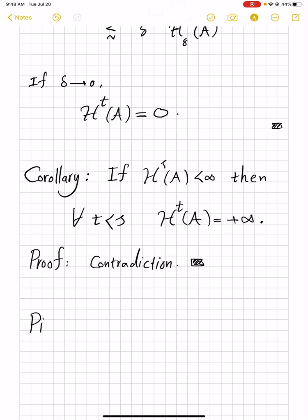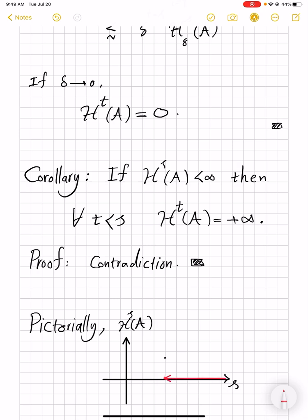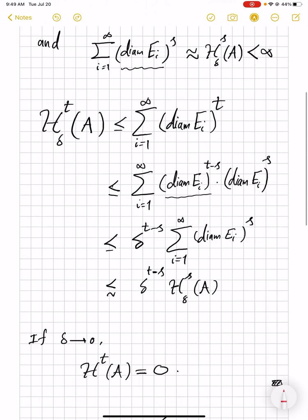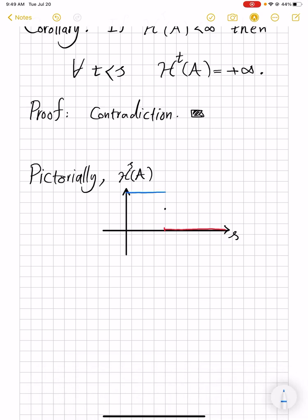Pictorially, what we have shown is the following. Here is the dimension you consider, and here is the H^s measure of your set A. What we're saying is that if at some s you have a finite quantity for your measure, then for all values after that you will have zero, and for all values before that you will have positive infinity. So you have infinity, then at one critical value s you may have a finite value, and then you drop to zero.